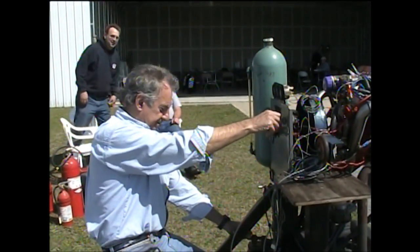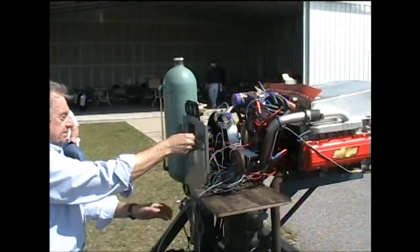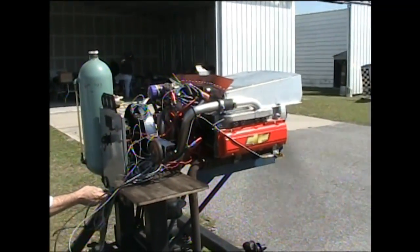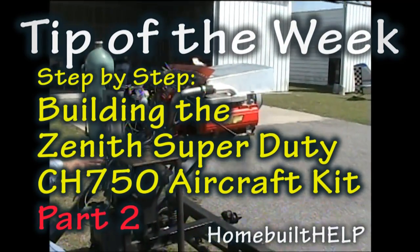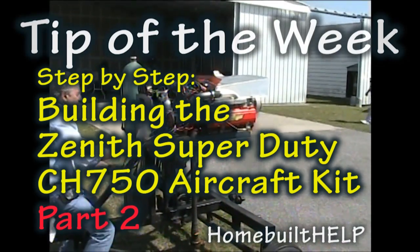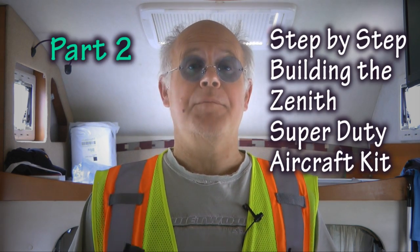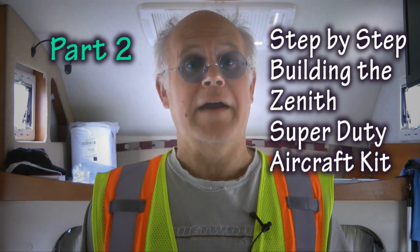We're going to start this puppy up. Clear? Prop? And welcome back to HomeBuilt Help's Tip of the Week. This week is going to be part two of the step-by-step building the Zenith Super Duty aircraft kit. By the end of this video, we'll have an almost completed rear fuselage section. So let's now continue exactly where we left off, back on part one.